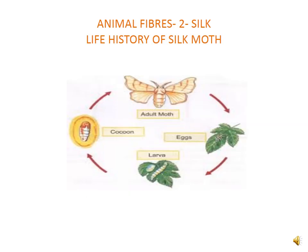Now we are going to study about the animal fiber second part, that is silk. Silk is obtained from silk moth or silkworm. The rearing of silkworm for obtaining silk is called sericulture. Silk fibers are also animal fibers. Silkworms spin the silk fibers.